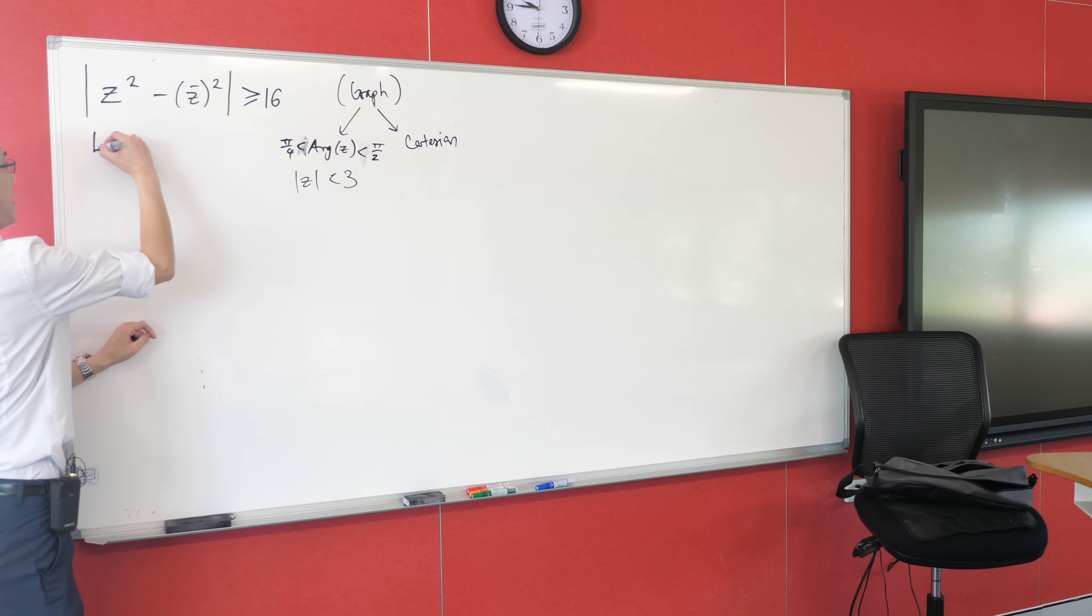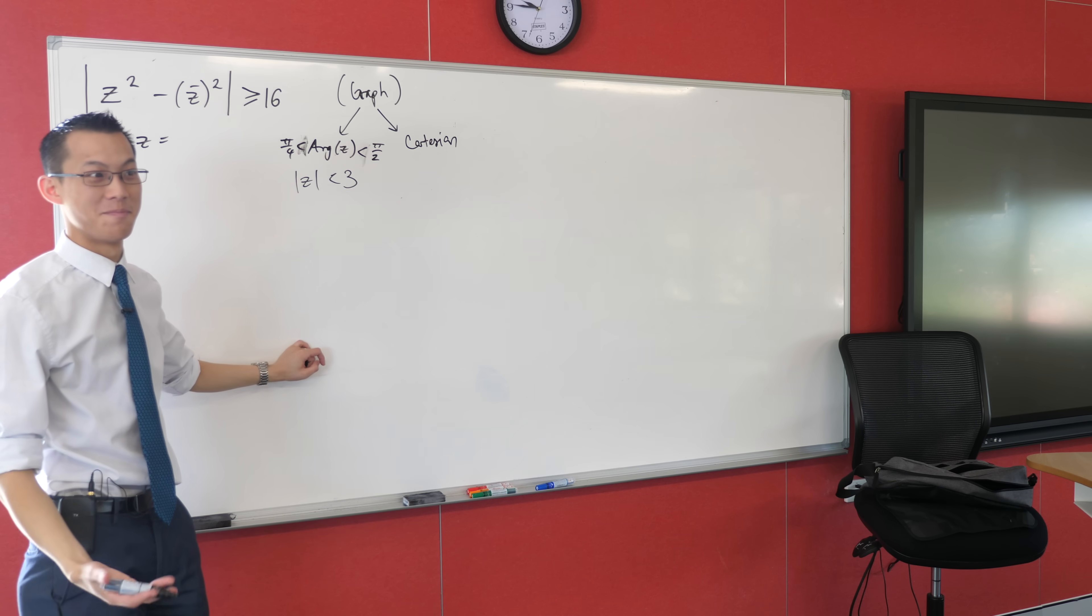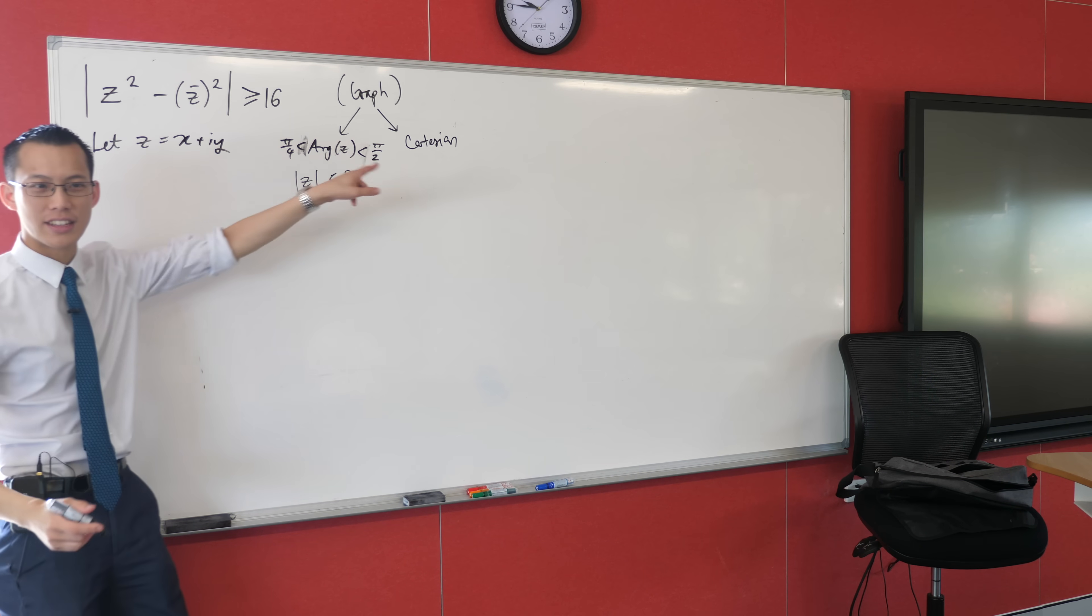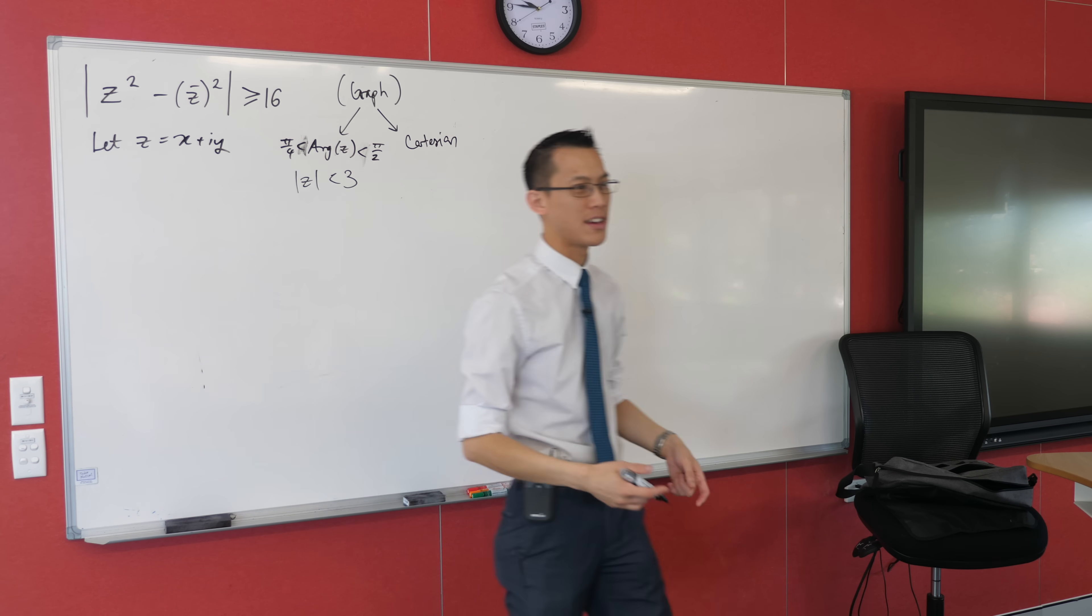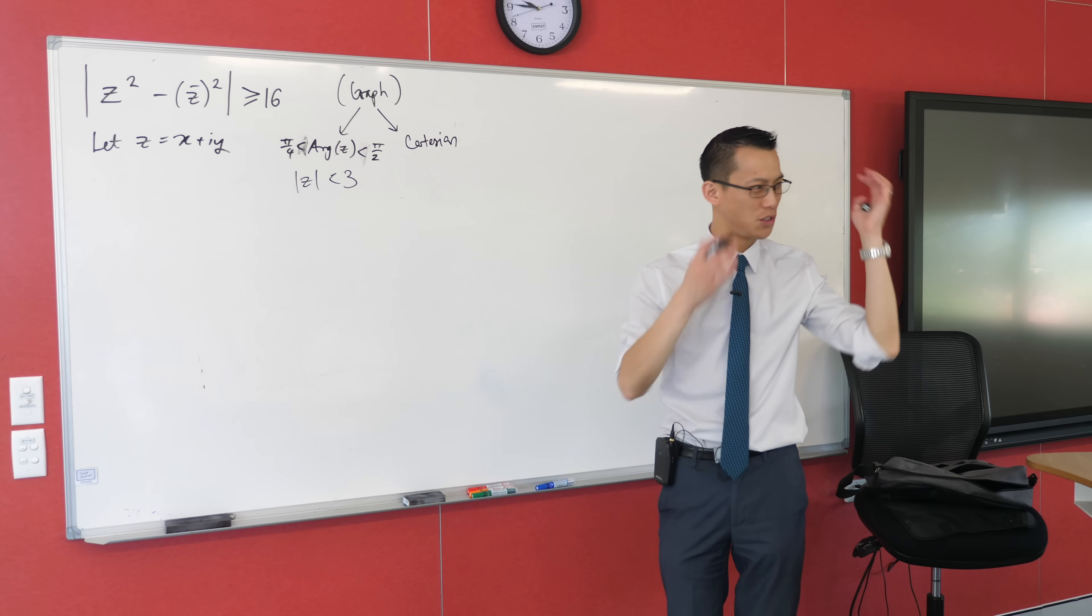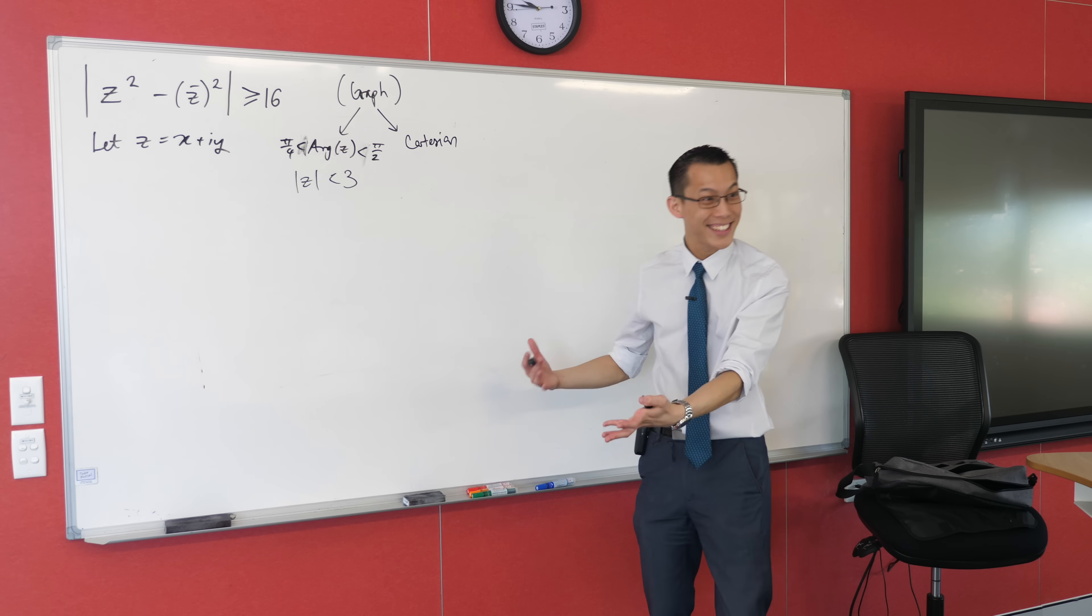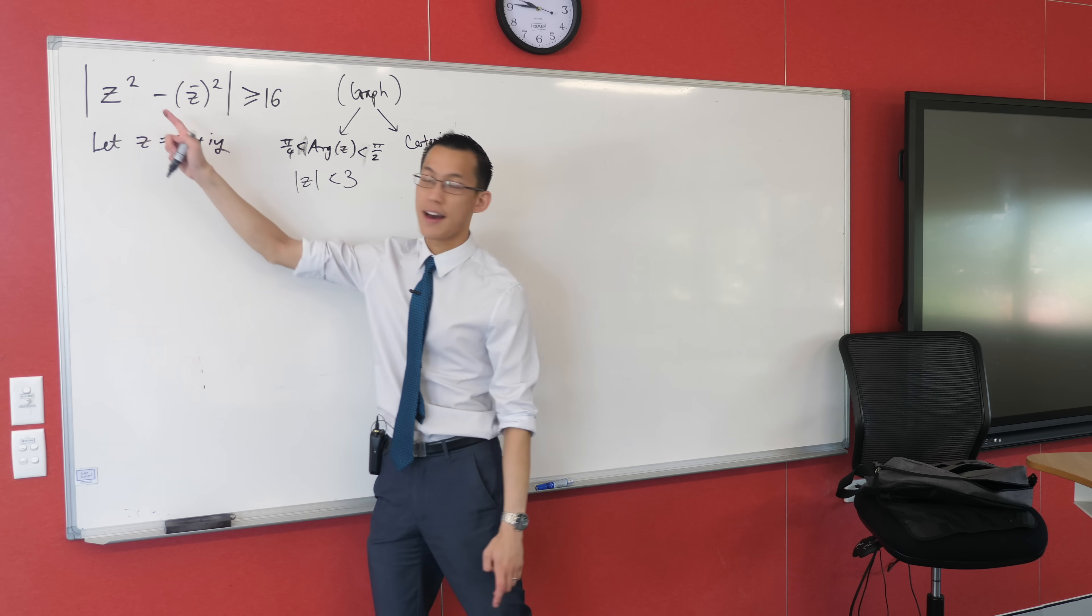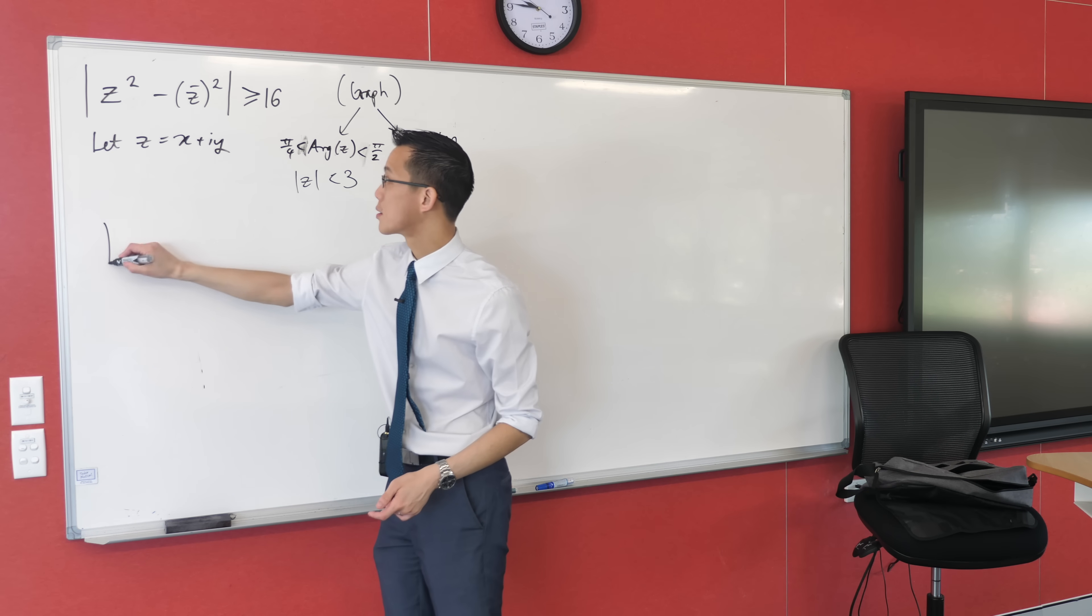I'm going to start with let z equal x plus iy, which will be perfect, right? This is that Cartesian leaning. I mean, you could have said a plus ib, but then you're going to have an a-axis and a b-axis, which just don't fit our brain nice and neatly. So I'm going to introduce that, and that means that I can now express everything that I have here in terms of my x's and my y's, and I wonder how you went with this.